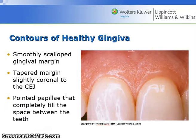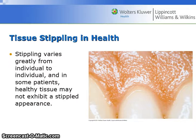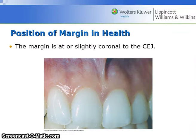The contours of healthy gingiva are smoothly scalloped at the gingival margin, tapered slightly coronal to the CEJ, and the papillae are pointed and completely fill the space between the teeth. Tissue stippling in health varies greatly from individual to individual, and in some patients healthy tissue may not exhibit a stippled appearance. The margin of the gingiva is at or slightly coronal to the CEJ.